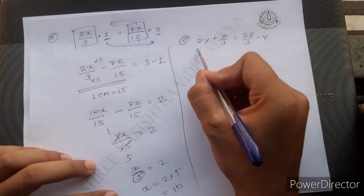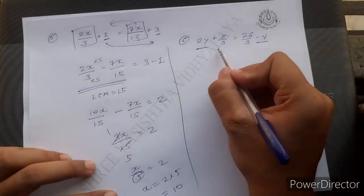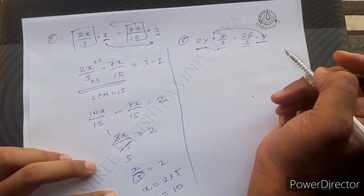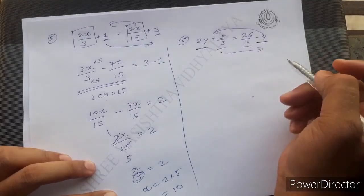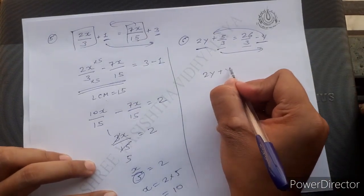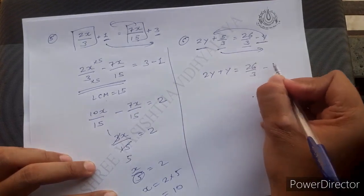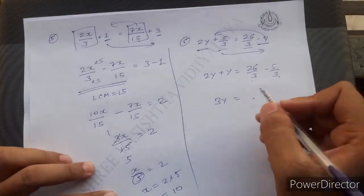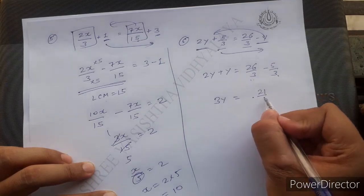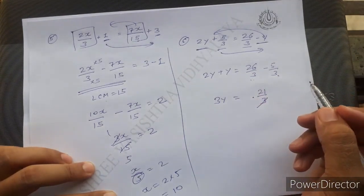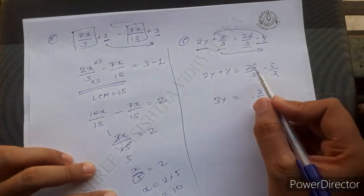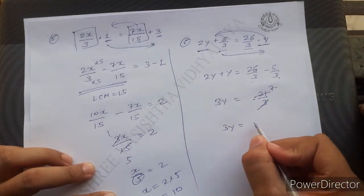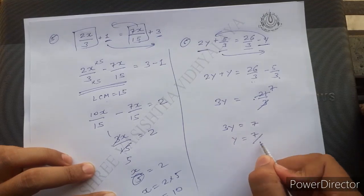For 2y plus 5 by 3 equals y plus 26 by 3: send minus y to LHS and plus 5 by 3 to RHS. So 2y plus y equals 26 by 3 minus 5 by 3. Now 2y plus y equals 3y, and since both denominators are the same, 26 minus 5 equals 21 by 3. Simplifying: 3y equals 21 by 3, and dividing both sides, y equals 7 by 3.